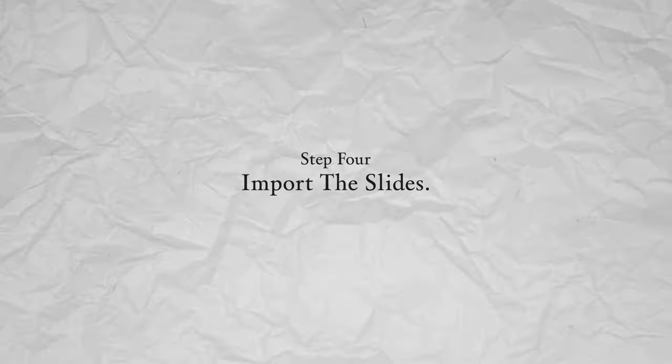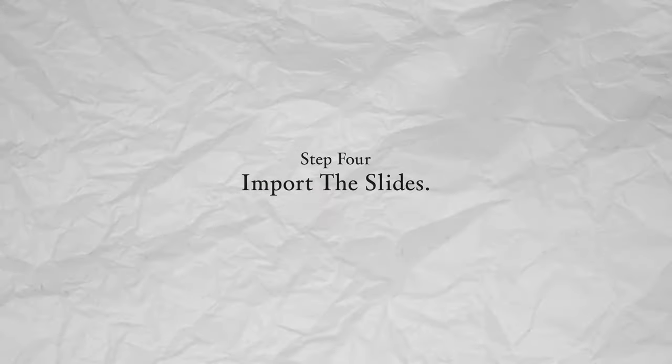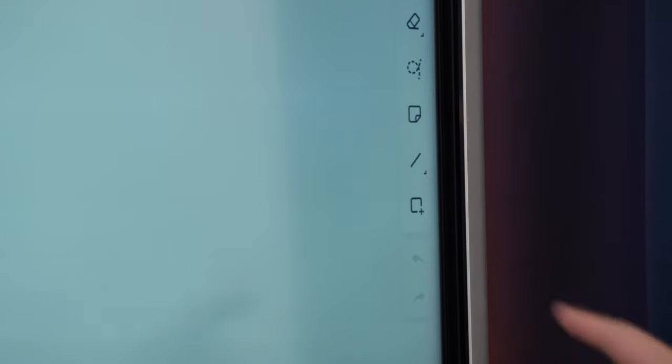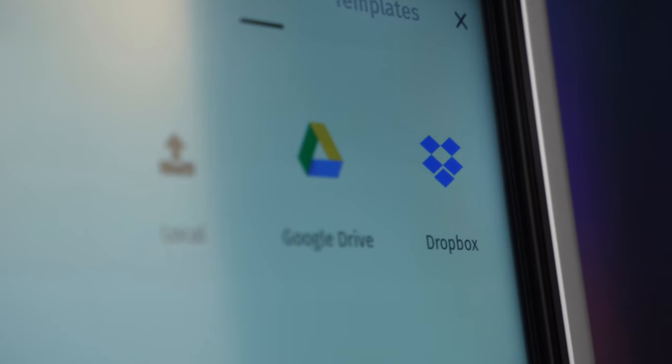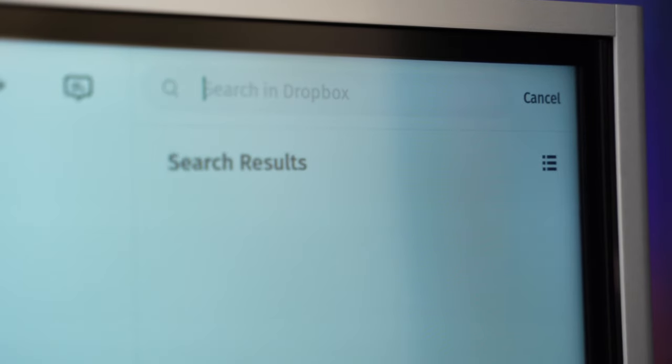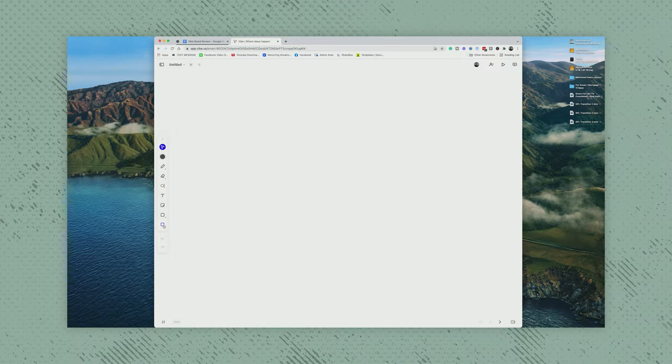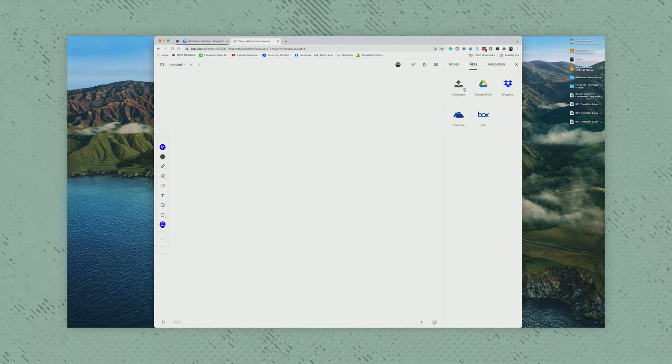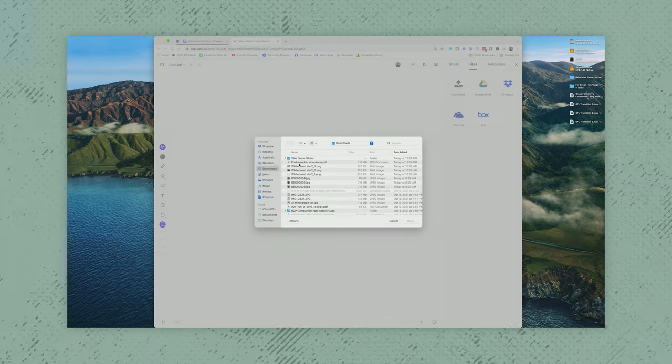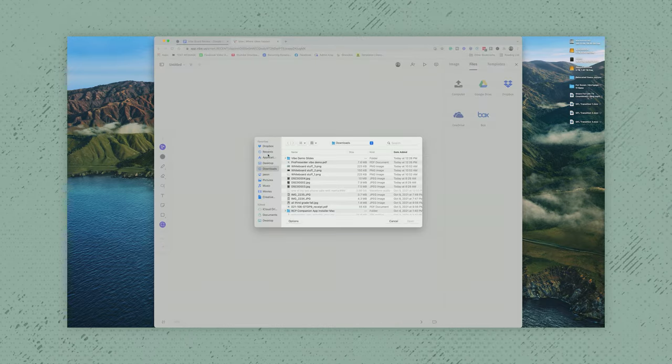Step 4: Import the slides into your Vibe Smart Board. From the tool palette select the box with a plus sign to add an element. Select Dropbox. Using the search bar I type in Vibe which brings up all of my Vibe Smart Board ready documents. You can also use the Vibe Canvas app to import your slides directly from your computer.